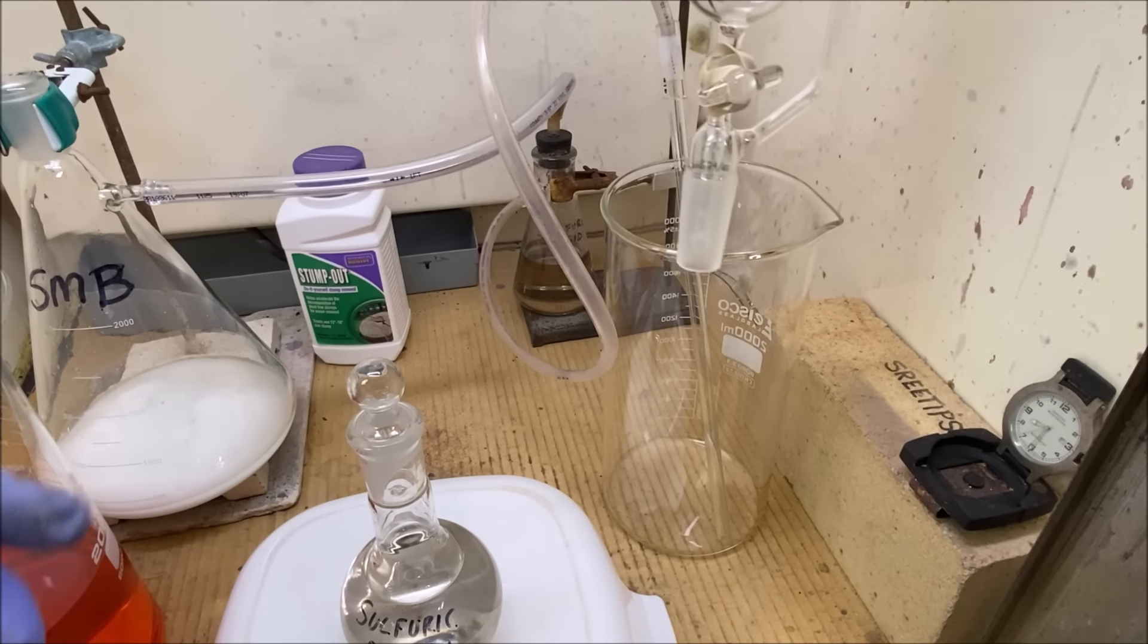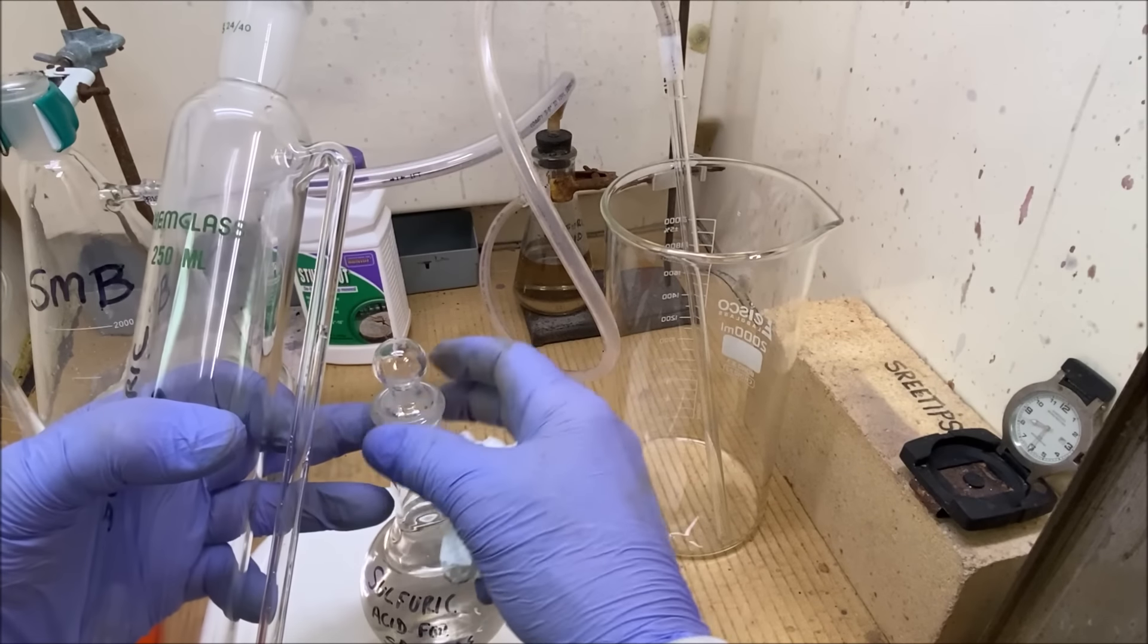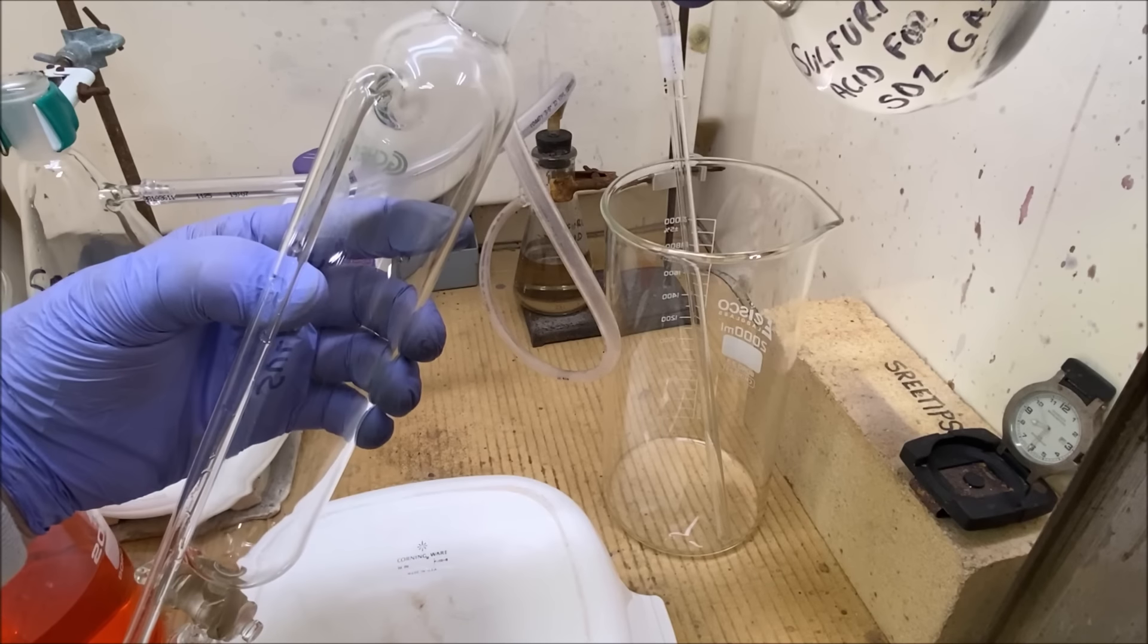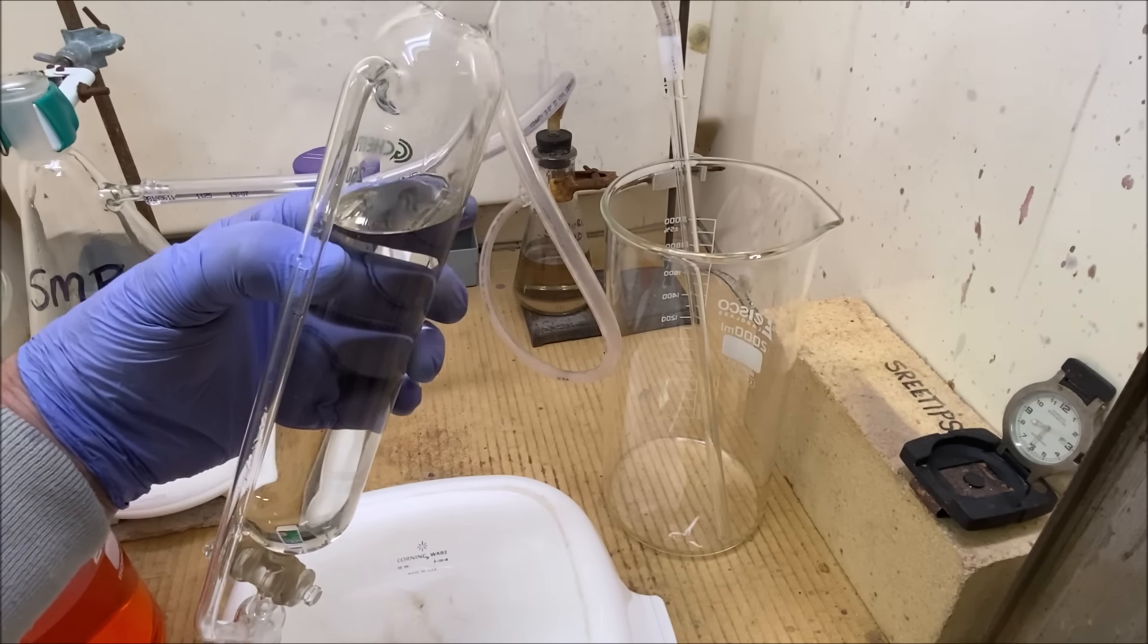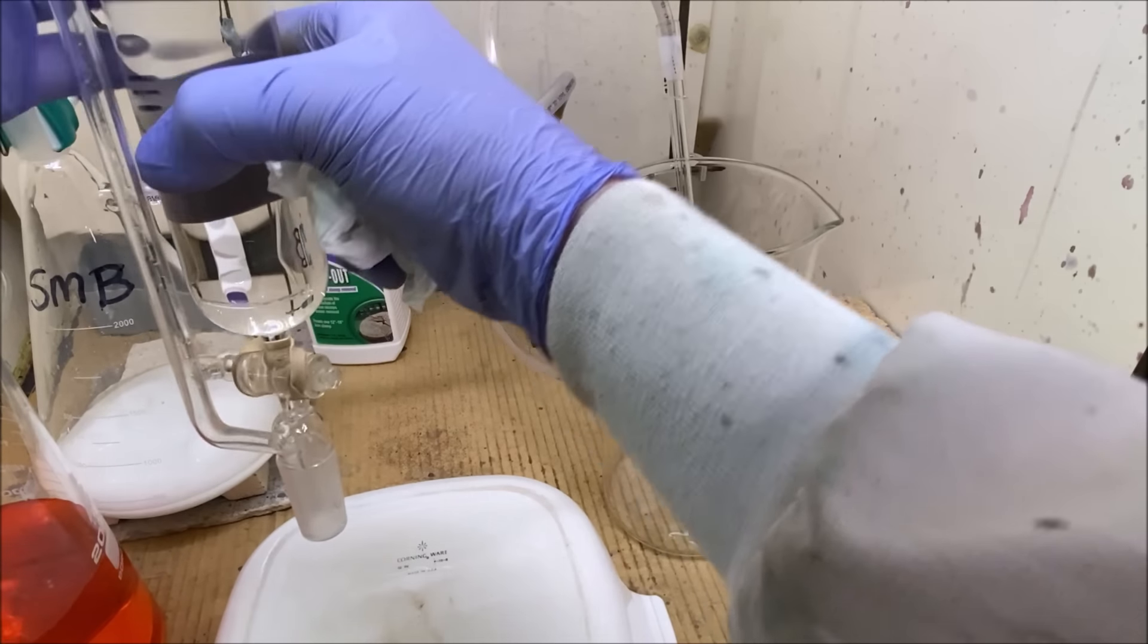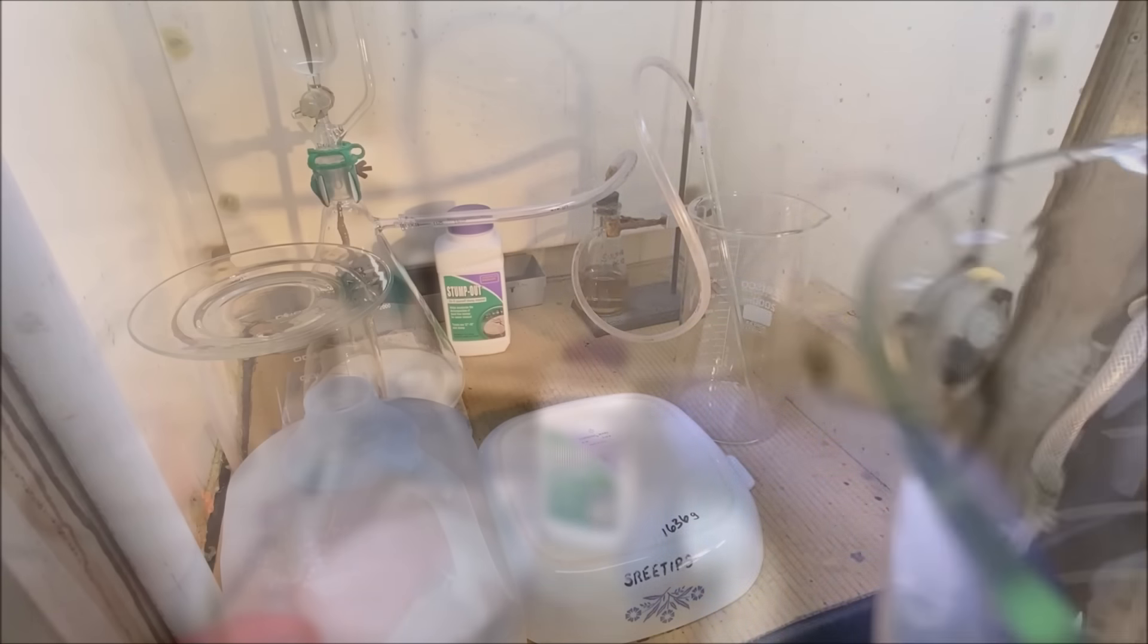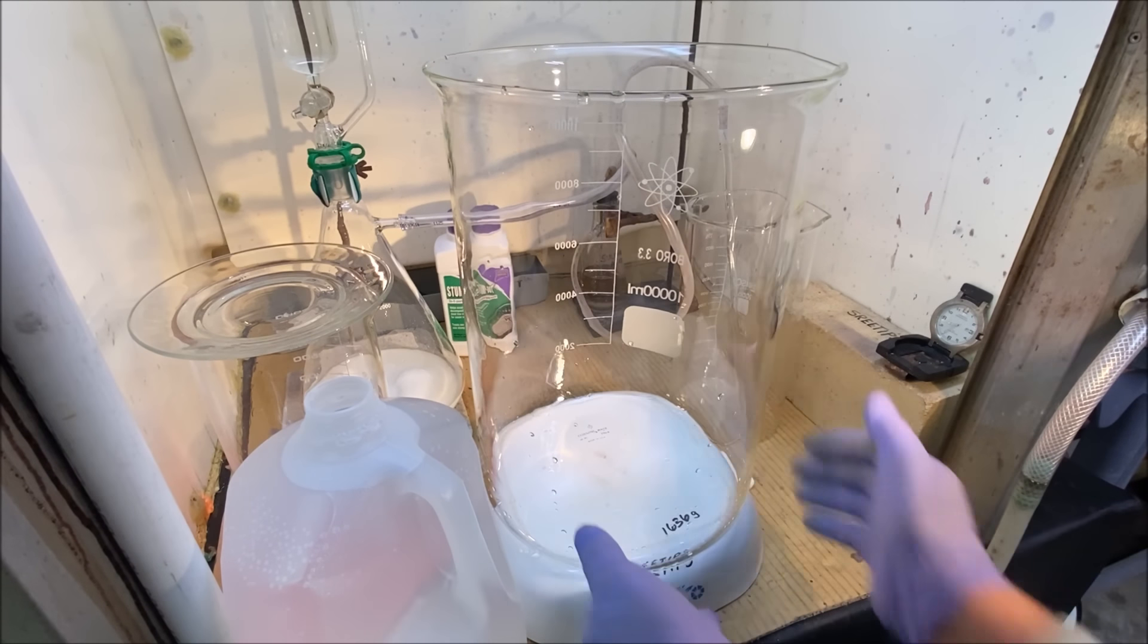All right, I've got my addition funnel here. I've got some sulfuric acid in this little flask. So what we'll do is go ahead and fill up our funnel with sulfuric acid. All right, there's that. I'm going to set this over here on top of our gas generator.